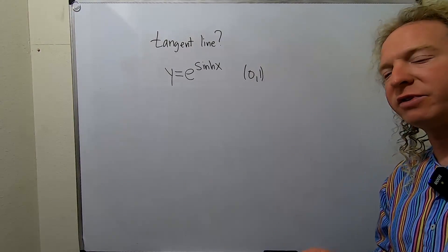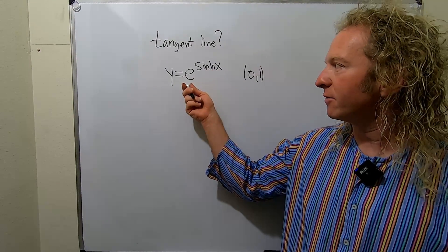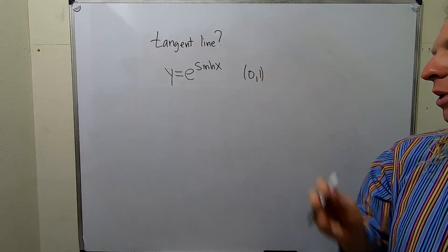In this problem, we're going to find the equation of the tangent line to the graph of this function at this point here, (0,1).